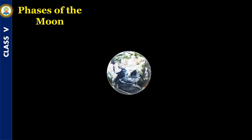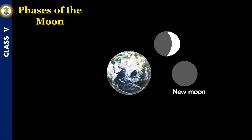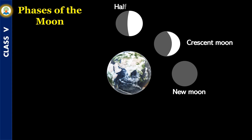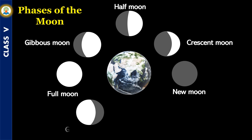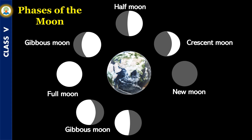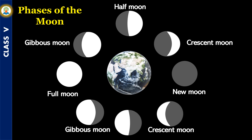As the Moon revolves around the Earth, its shape appears to change. The different shapes of the Moon are called the phases of the Moon. Phases are caused by the changing positions of the Sun, Moon and Earth with respect to each other.